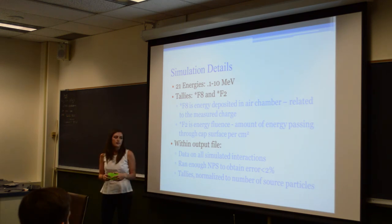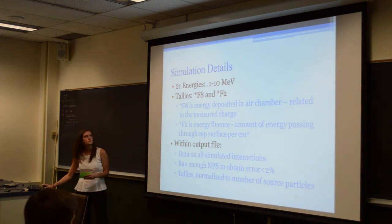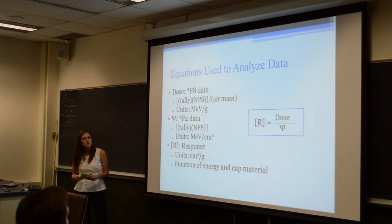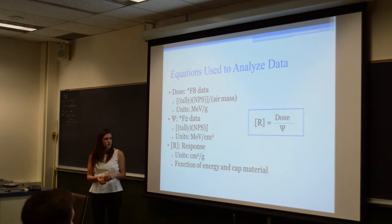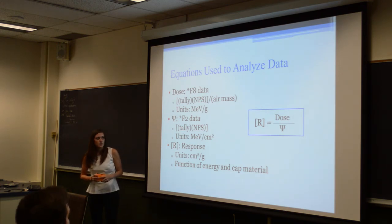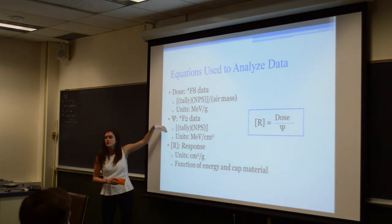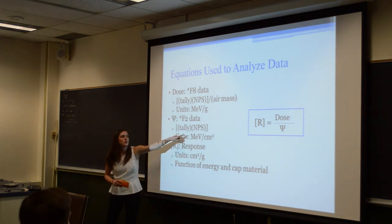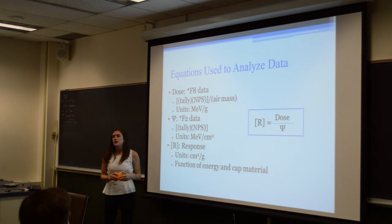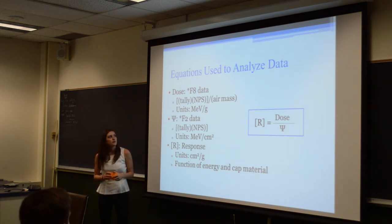We ran enough particles through the simulation to get our error for the tallies below 2%. The main equation is: response equals dose over fluence. The way we calculated dose is to take the F8 tally. If the number of particles for the F8 and F2 are different, you have to normalize by multiplying by NPS, which is the number of particles. We then divided by air mass, which gave us MeV per gram.